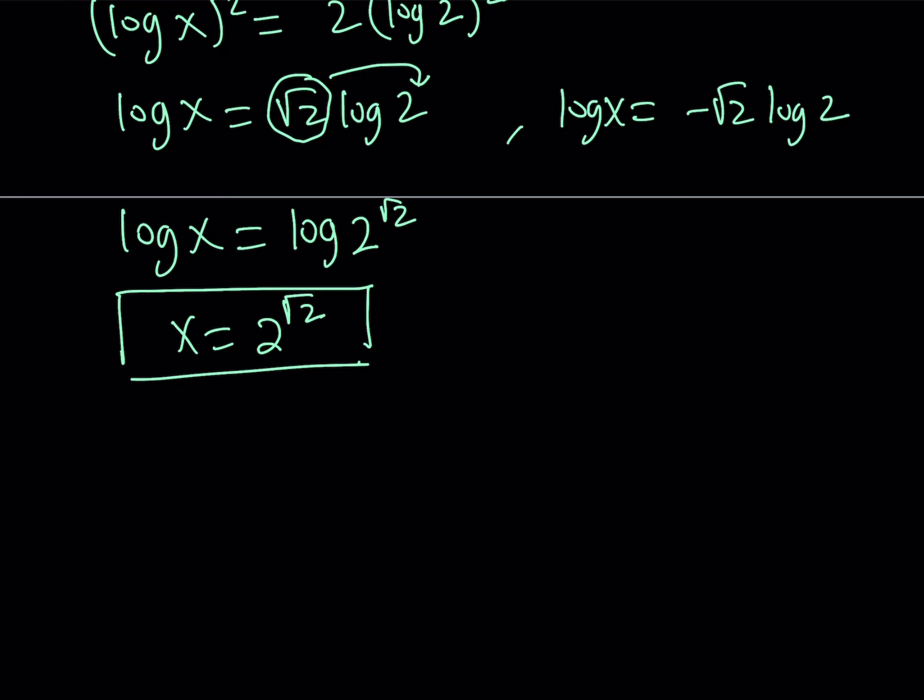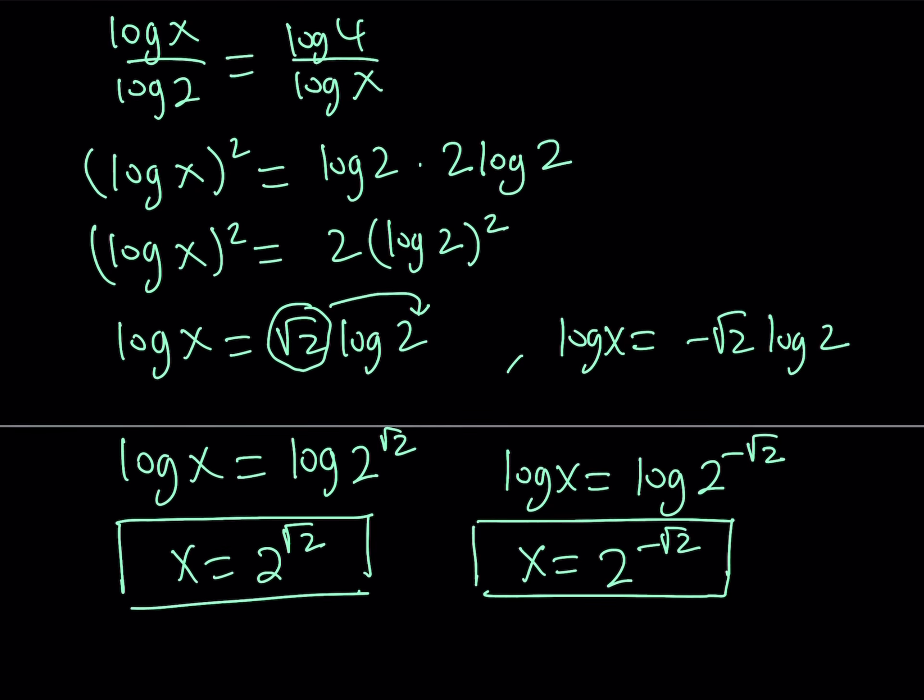From the second one, we can get log x equals log 2 to the power negative root 2, and from here, x becomes 2 to the power negative root 2. So, we're basically getting two solutions by using the change of base formula.